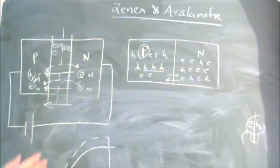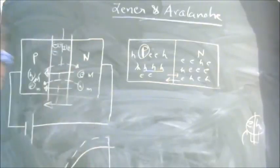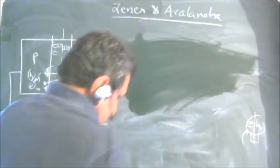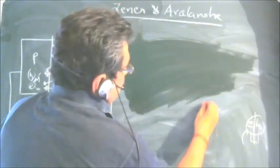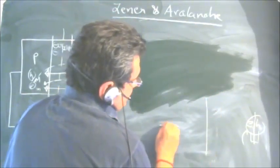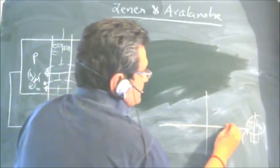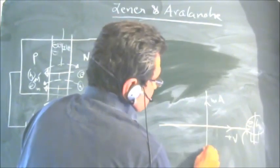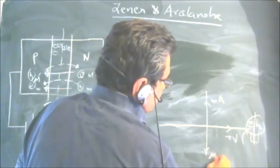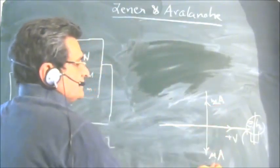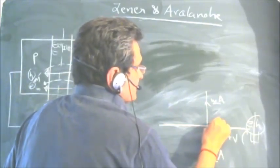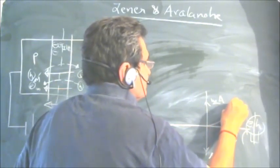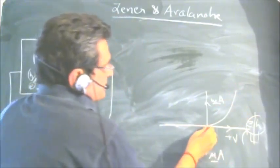Now coming to the zener diode and breakdown. The zener diode is operated in reverse bias mode. Looking at the voltage-current graph: the positive voltage side shows current in milliamperes, and the reverse direction shows current in microamperes. In forward bias the graph rises normally, but in reverse bias there is a very small current flowing.